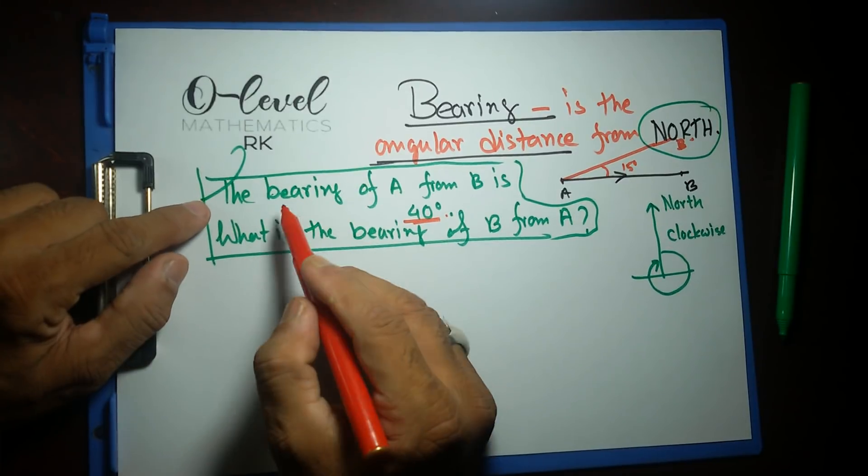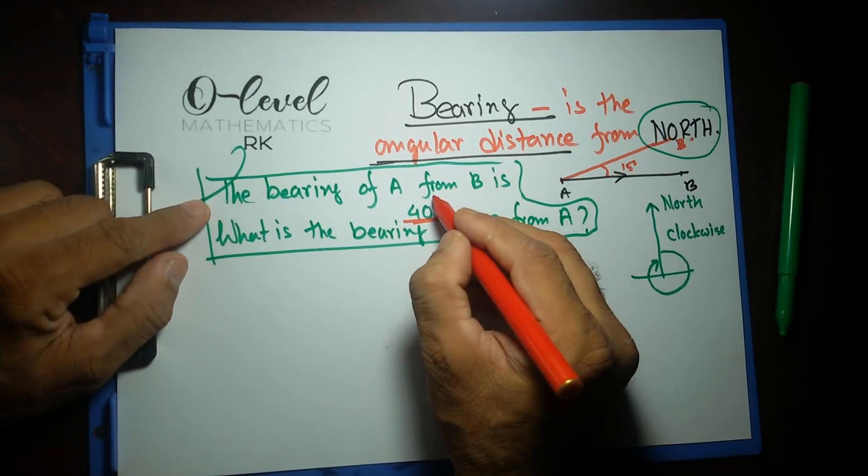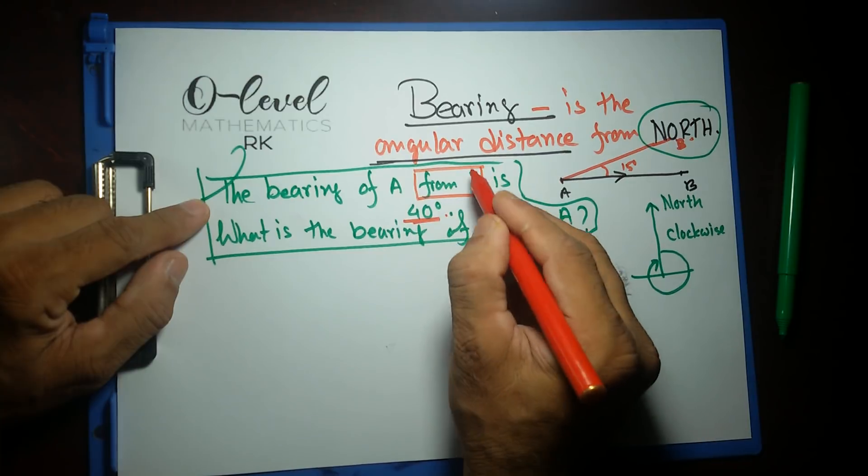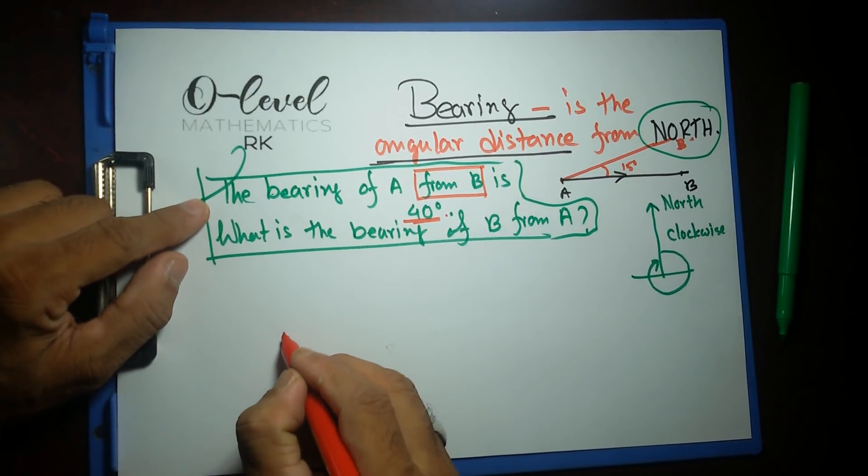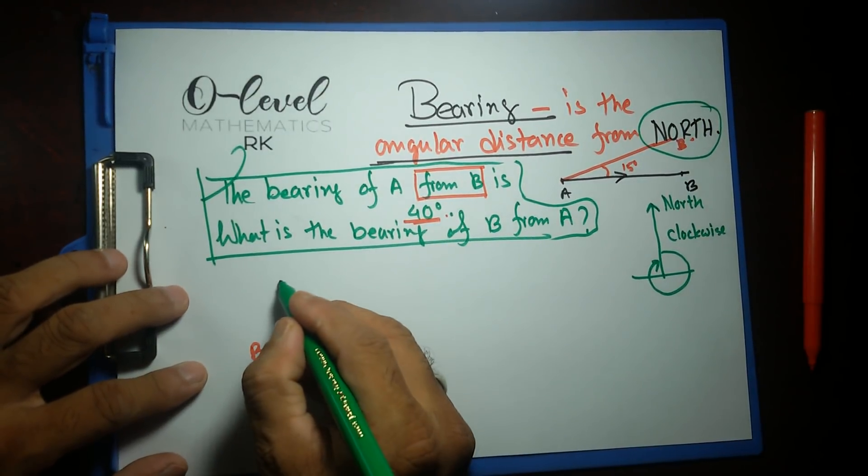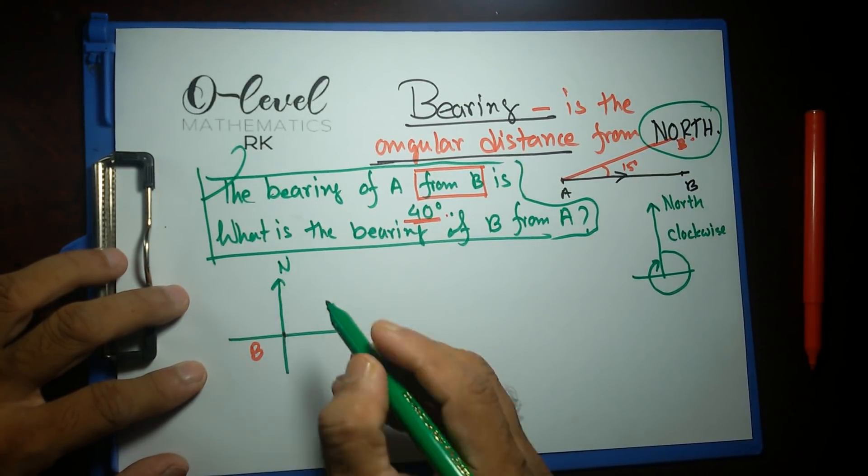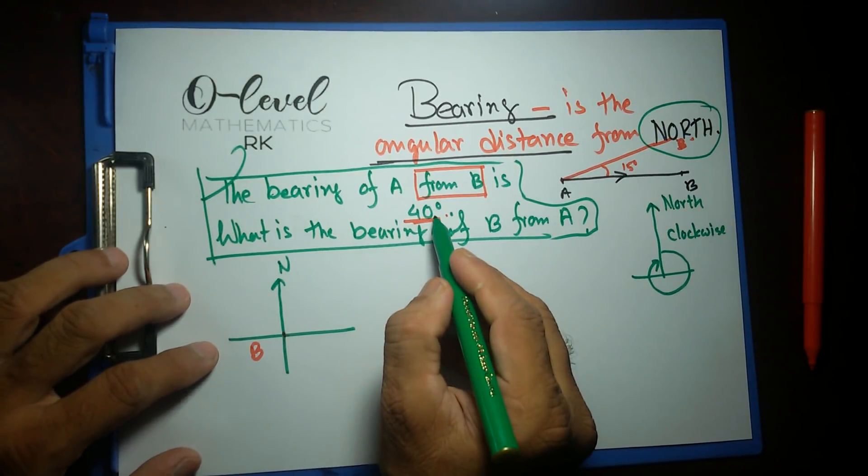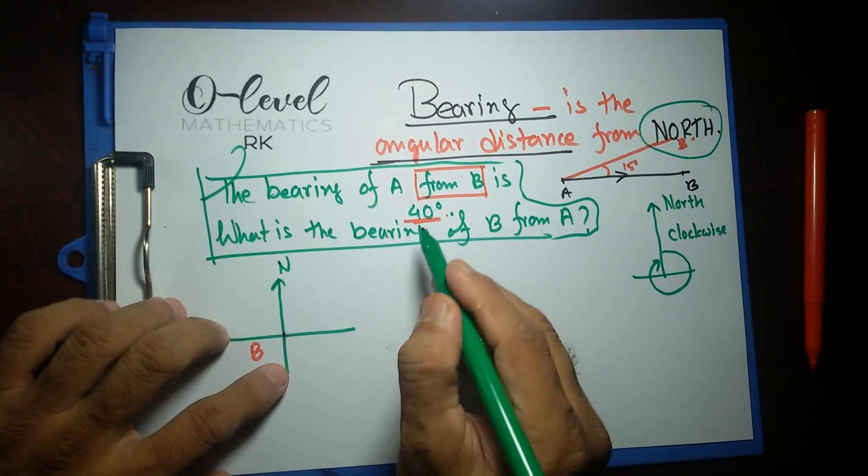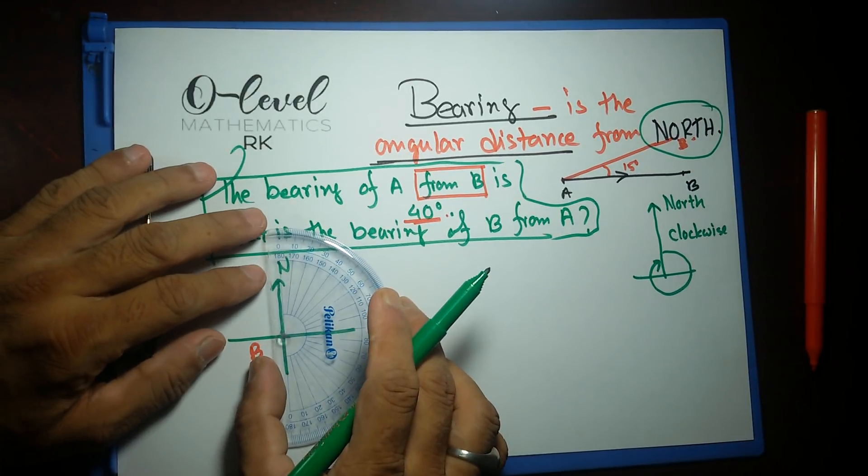Let's try to understand the first sentence of this. The bearing of A from B. One of the important points is whatever it says 'from B.' Let's say this is the point B over here. From B. Now what you need to do is just draw a plus sign on this particular point B. And upside is gonna be north.